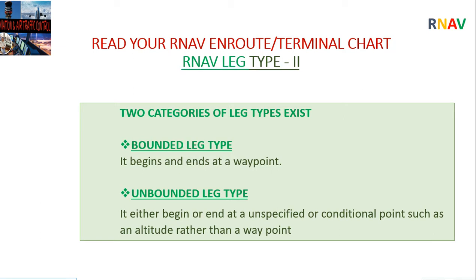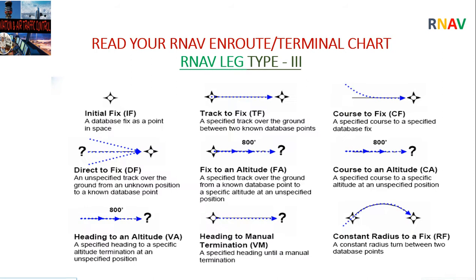Two categories of leg types exist: bounded leg types, which begin and end at a waypoint, and unbounded leg types, which either begin or end at an unspecified or conditional point such as an altitude rather than a waypoint. Specific leg types include track to fix — a specified track over ground between two waypoints; direct to fix — an unspecified track from an unknown position to a waypoint; and heading to an altitude — a specified heading to a specific altitude, terminating at an unspecified position.